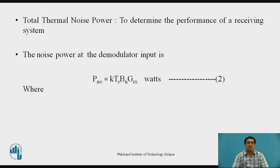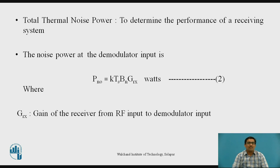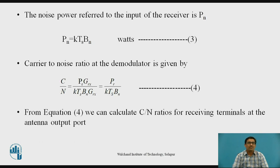Total thermal noise power is used to determine the performance of a receiving system. The noise power at the demodulator input is PnO = K × Ts × Bn × Gr(x), where Gr(x) is the gain of the receiver from RF input to demodulator input, and Bn is the narrowest bandwidth. The noise power referred to the input of the receiver is Pn = K × Ts × Bn. The carrier-to-noise ratio at the demodulator is C/N = PR × Gr(x) / (K × Ts × Bn × Gr(x)), which simplifies to PR / (K × Ts × Bn). This is equation number 4, and it is used to calculate the C/N ratio at the receiving terminal antenna output port.